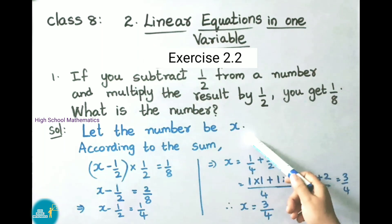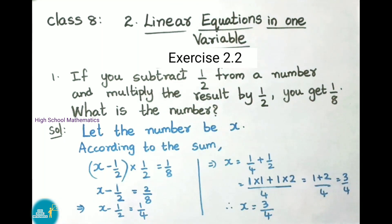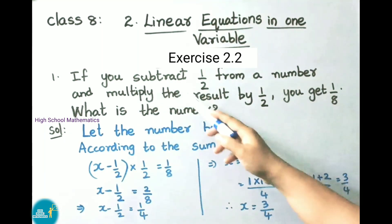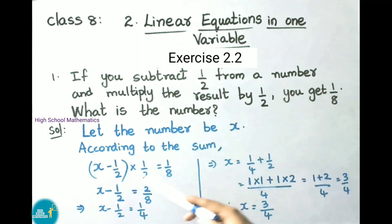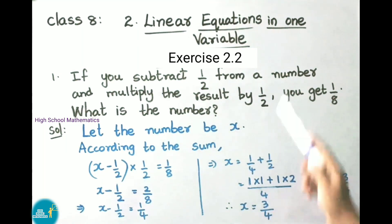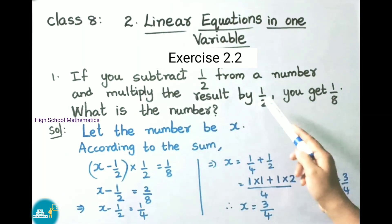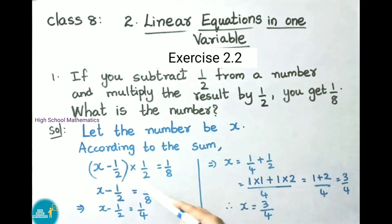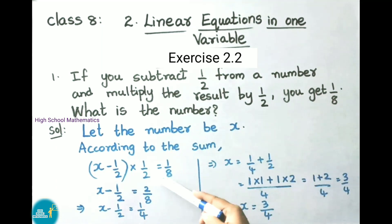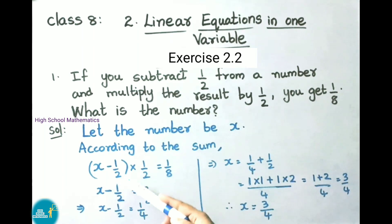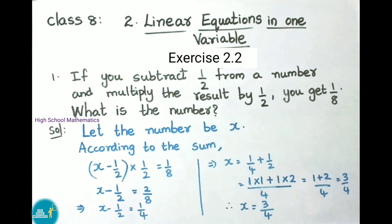Let the number be x. According to the sum, 1/2 is subtracted from the number, so x minus 1/2, and that is multiplied by 1/2. So (x minus 1/2) into 1/2 equals 1/8.